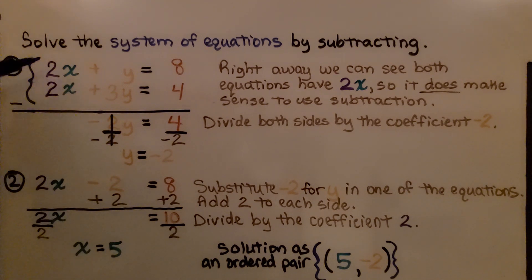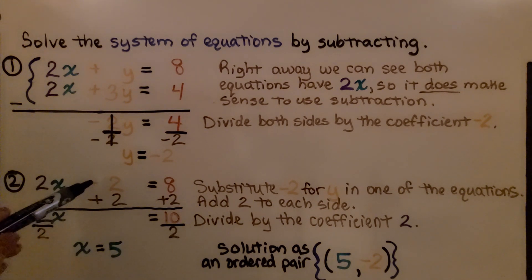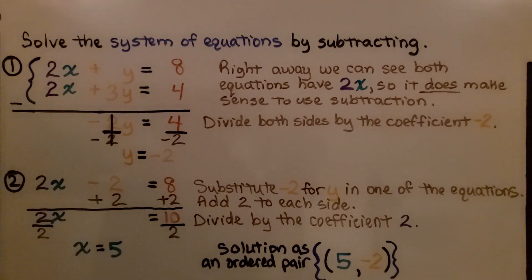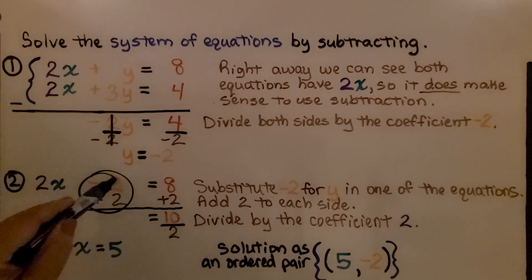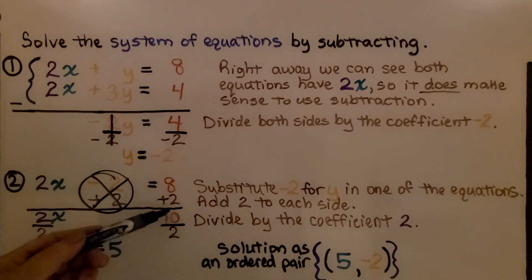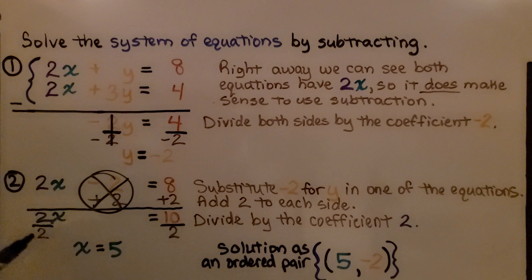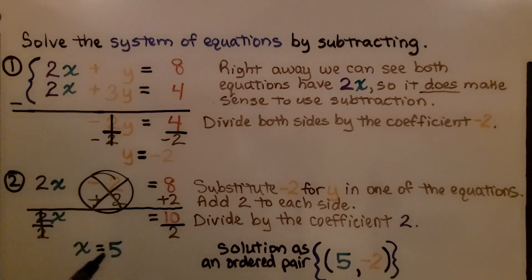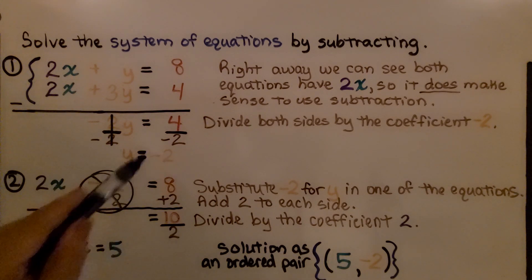Now we pick one equation — I'll use the first one — and substitute negative 2 for y. We get 2x plus negative 2 equals 8, or 2x minus 2 equals 8. We add 2 to each side, creating a zero pair, giving us 2x equals 10. Dividing both sides by 2 gives x equals 5. The solution as an ordered pair is (5, negative 2).